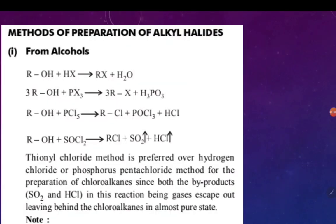Now let's look at methods of preparation of alkyl halides. The first method is from alcohols. The first reaction: alcohol plus HX gives alkyl halide plus water — where HX means HCl, HBr, HI, or HF. This is a very common method of preparation of alkyl halide.